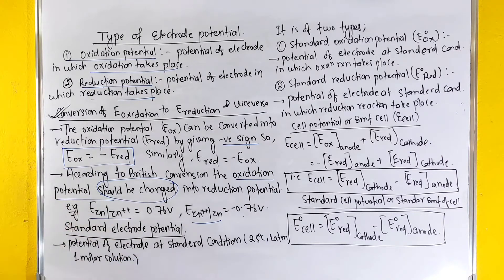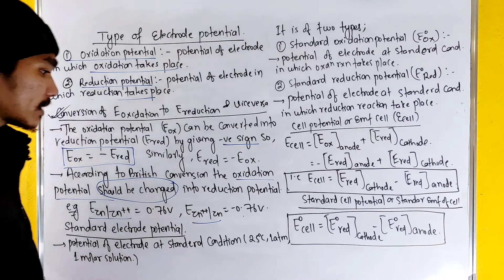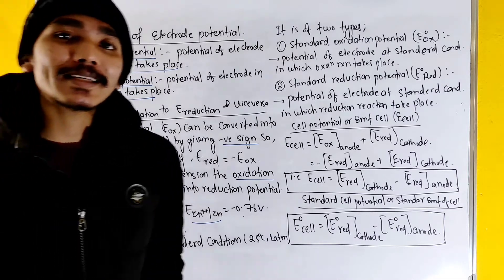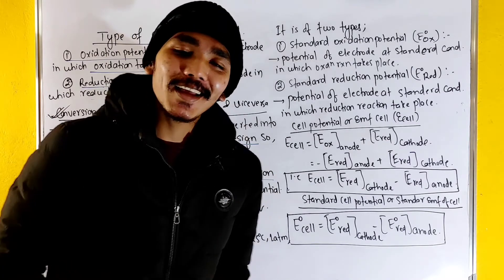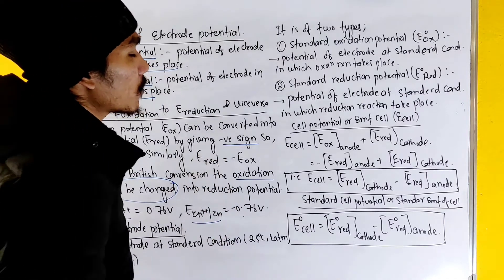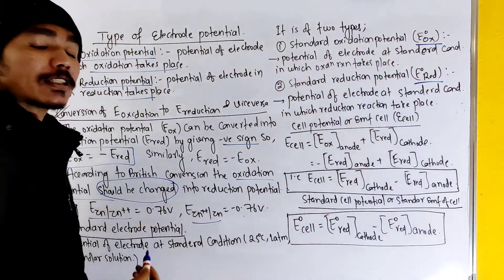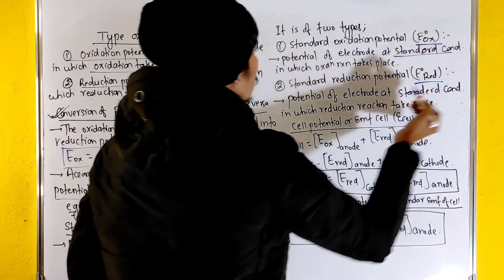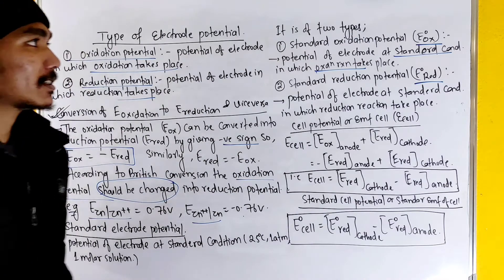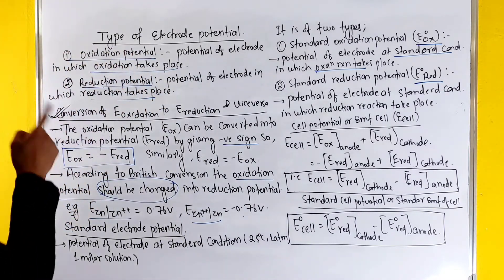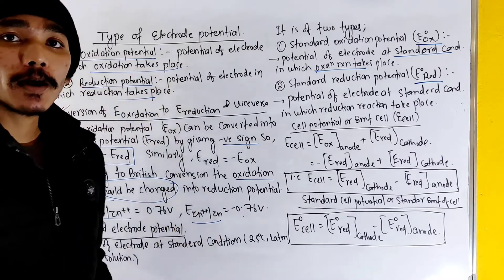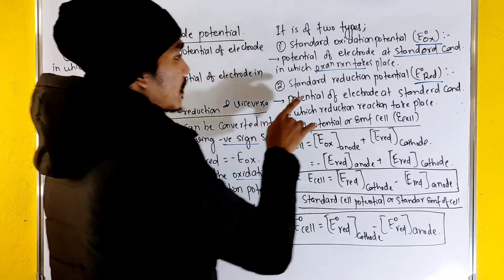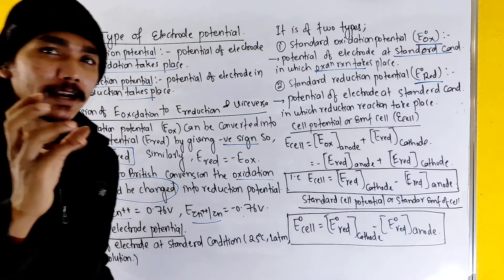One simple concept — what is the standard electrode potential? It is defined under standard conditions. It is of two types: standard oxidation potential and standard reduction potential. The standard electrode potential under standard conditions includes both the standard oxidation potential and the standard reduction potential.